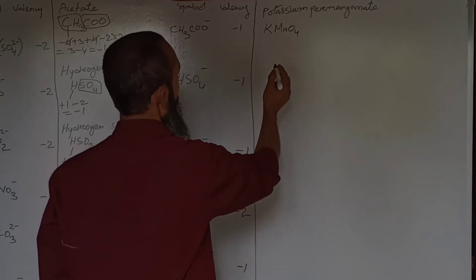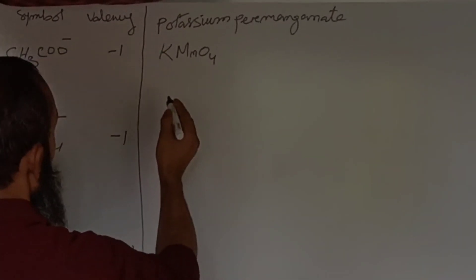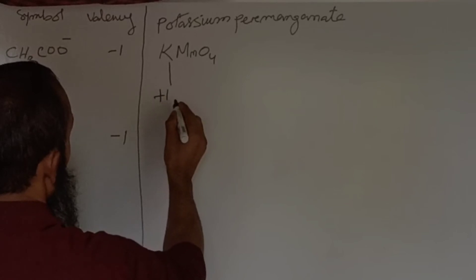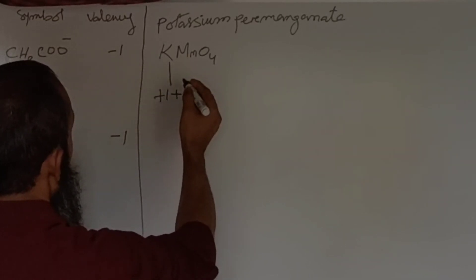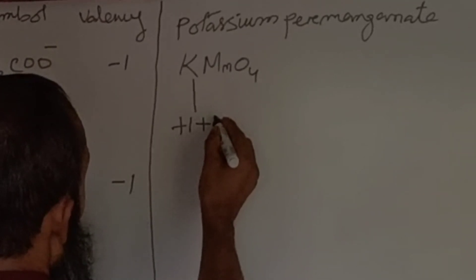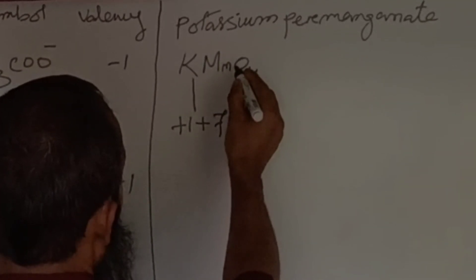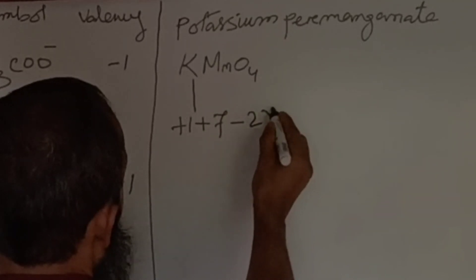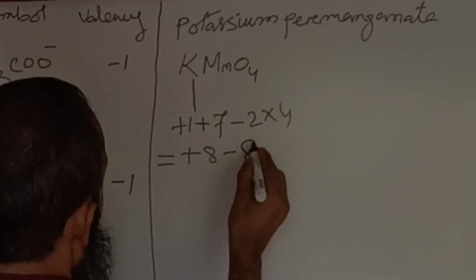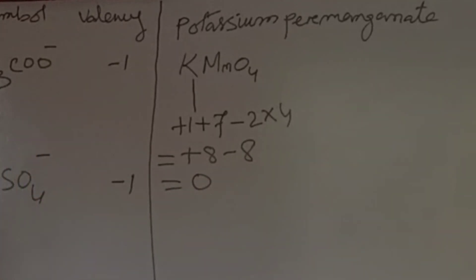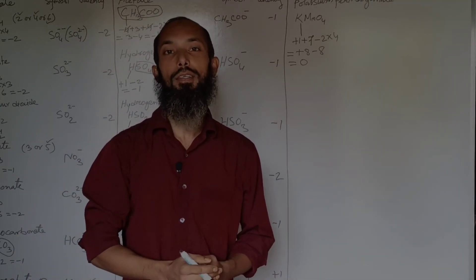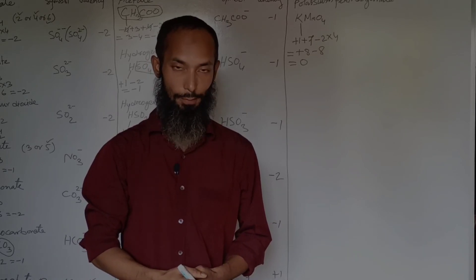Now let's see potassium permanganate — there are three different elements here. Potassium has valency plus 1 and is electropositive. Manganese valency we select as 7, based on the above principle. Oxygen is electronegative with valency 2, four atoms of oxygen are there. So plus 1 plus 7 minus 8 gives valency 0. I hope you have learned about the valency of radicals. If you are satisfied, please subscribe. Thank you.